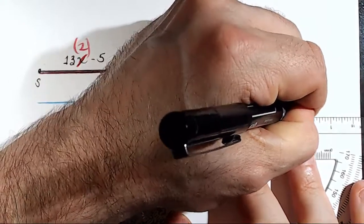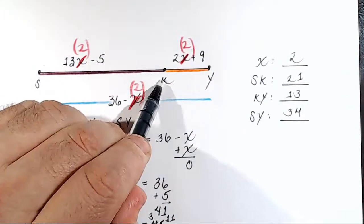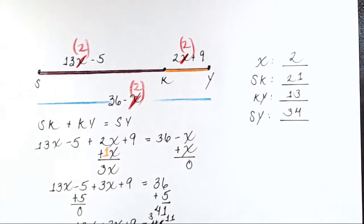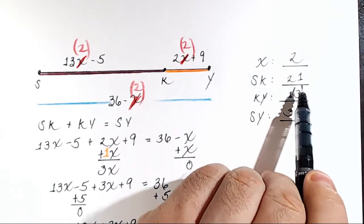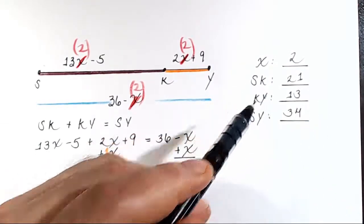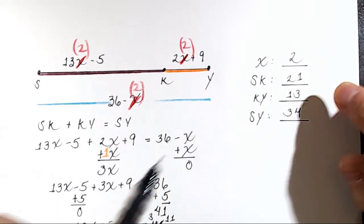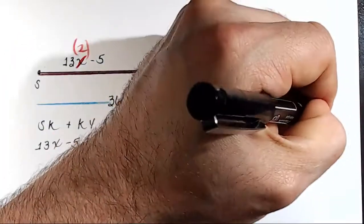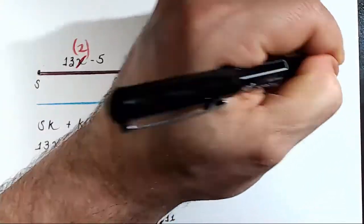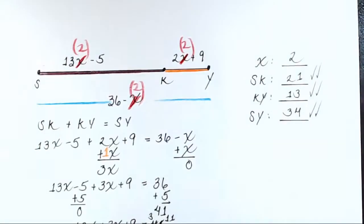Now, here's how we check this. SK plus KY should equal 34. Does it? Let's see. We have a stack add here. Here's SK. Here's KY. Let's add. 1 plus 3 is 4. 2 plus 1 is 3. What a beautiful verification that we are correct about everything. I love it.